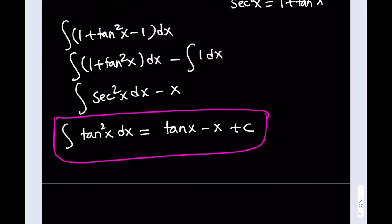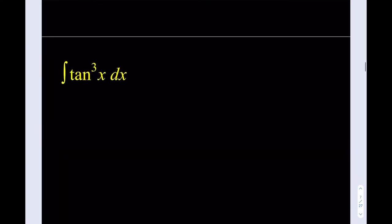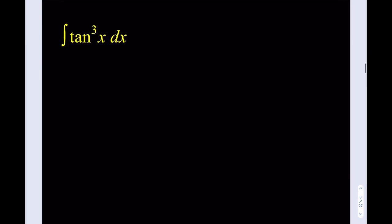The next one is going to be tangent cubed x. With odd powers, a lot of times we separate one of them — similar to how we handle sine and cosine. For example, with cosine squared you write it as 1 minus sine squared using the Pythagorean identity. So with odd powers, we separate one factor to manipulate the equation better. Here I'm going to write tangent cubed x as tangent squared x times tangent x.